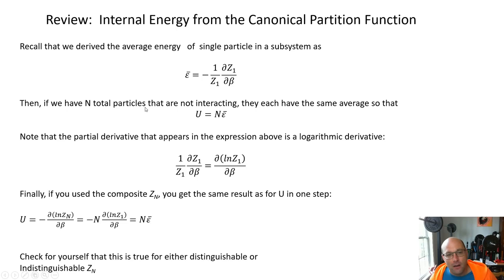If we had N total particles that were not interacting, each one of those particles would have the same e bar. And so when you added them all up to get the total internal energy U, the answer will just be N times e bar.